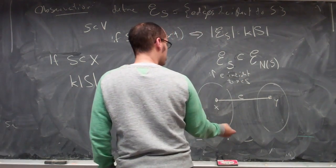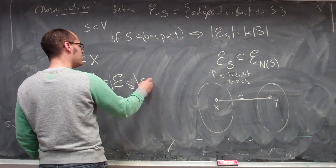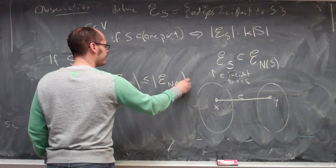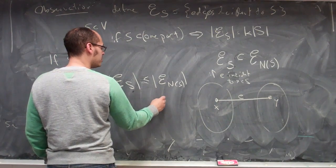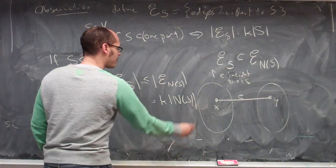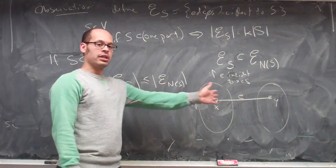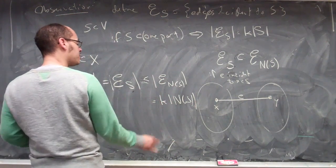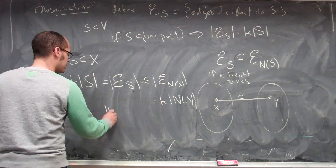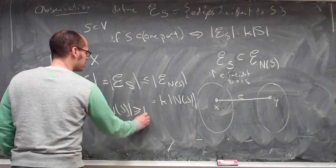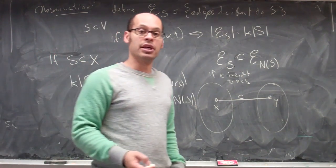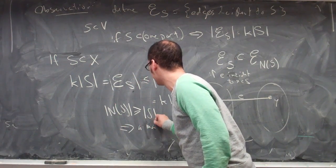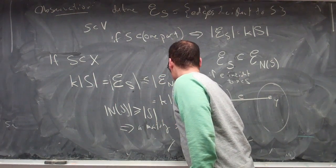So this inclusion simply captures that picture. What that says is that the number of edges incident to s is less than or equal to the number of edges incident to the neighborhood of s. But that equals k times the number of things in the neighborhood, because the neighborhood of s is a subset in the other part y. Dividing both sides by k — which is a positive number — tells us that the size of the neighborhood is at least as big as the size of the set. That puts us in the context of our previous theorem, and therefore there exists a matching which saturates x.